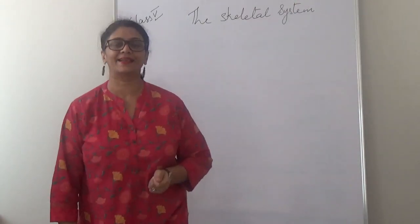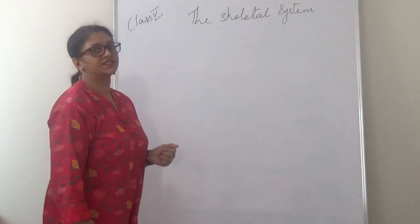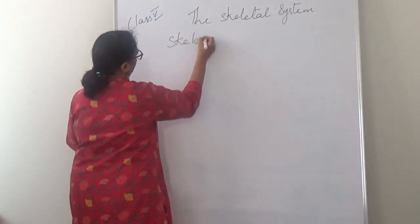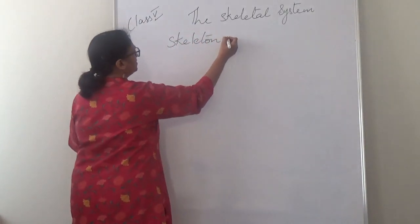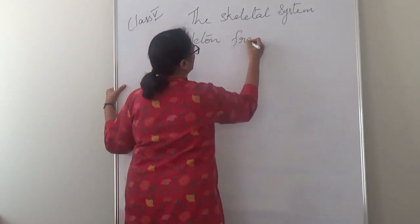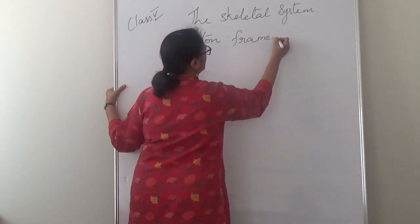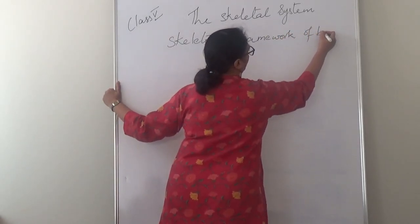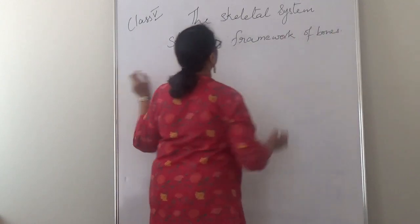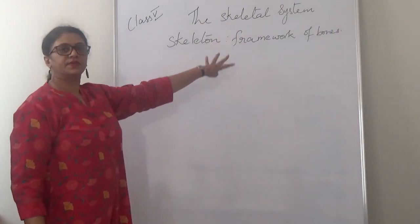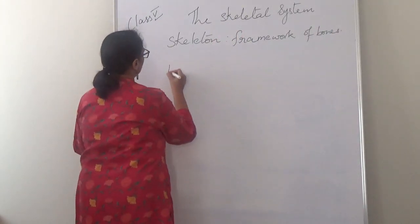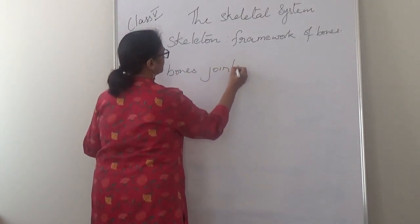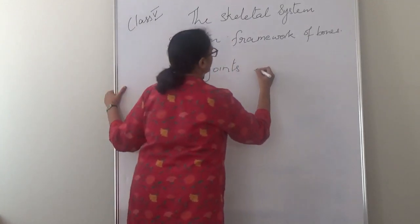Now what is the skeleton? The skeleton is a framework of bones. The skeletal system is made up of bones, joints, and ligaments.